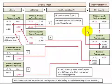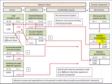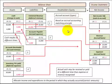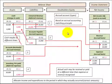To summarize accrual accounting: this is where we use the matching principle, recognizing our revenue and expenses on the income statement based on the actual period in which they occurred. Any increases or decreases in cash on our balance sheet don't directly correlate with the timing of our revenues and expenses on the income statement. That's because accrual accounting allocates income and expenditures to the period in which they actually occurred, not based on when we received or paid any cash.